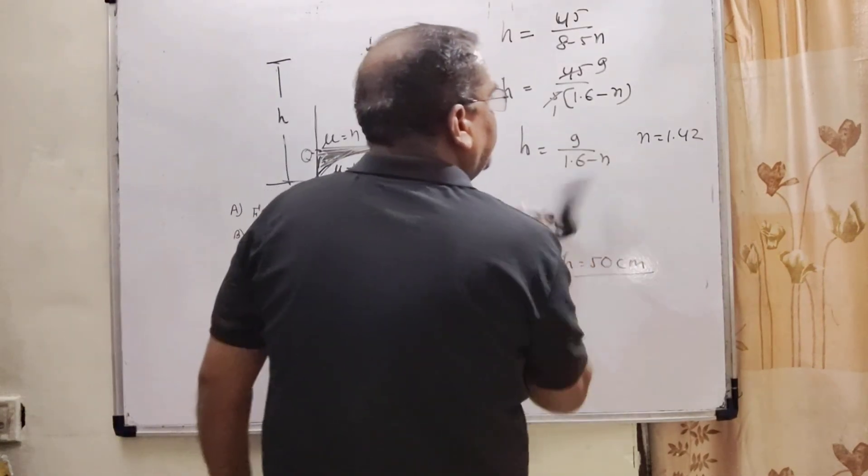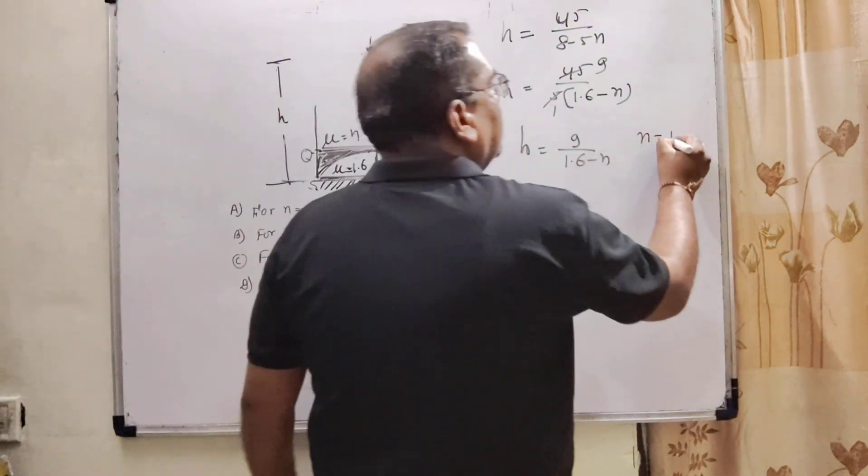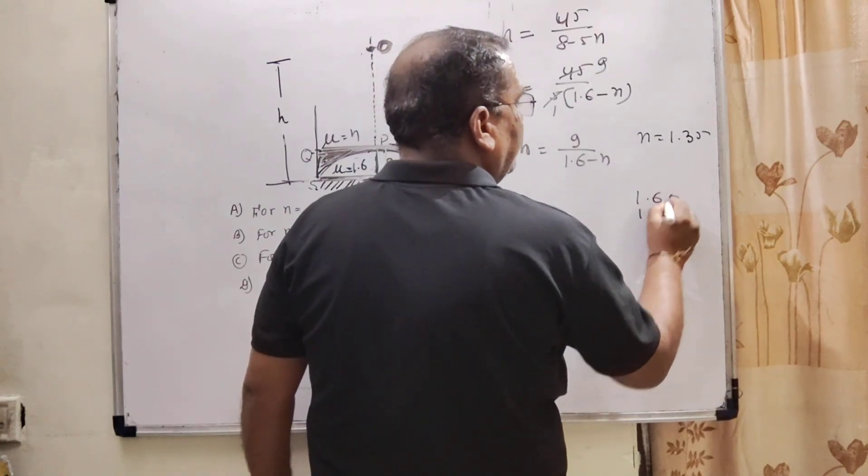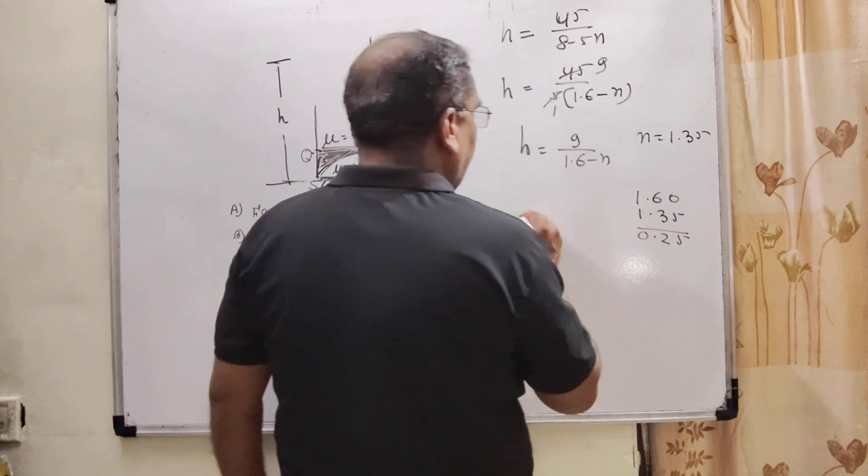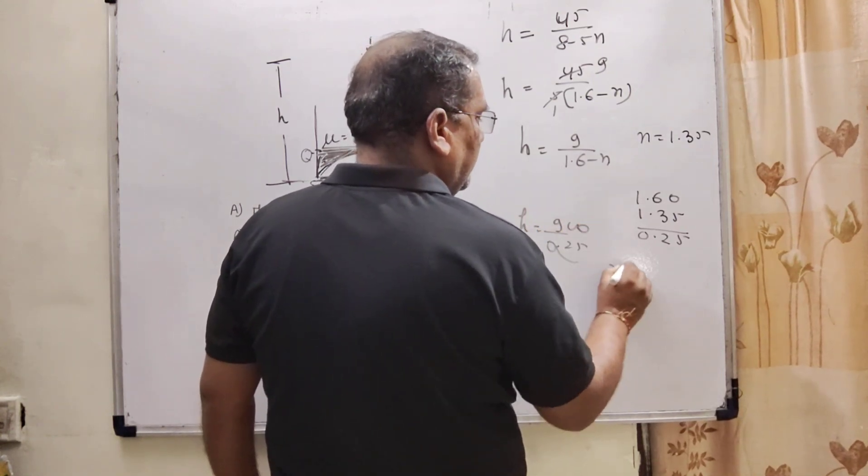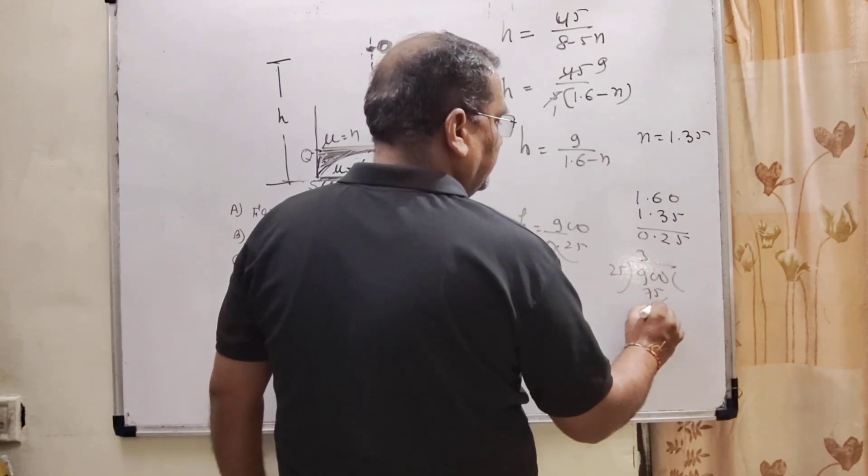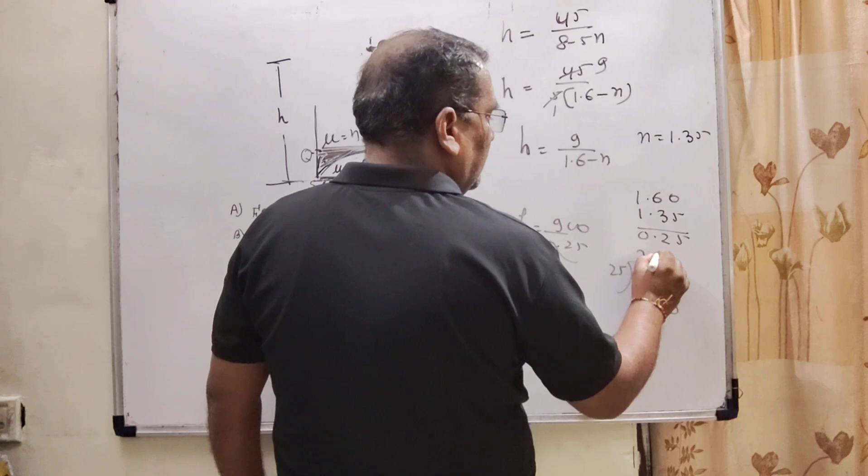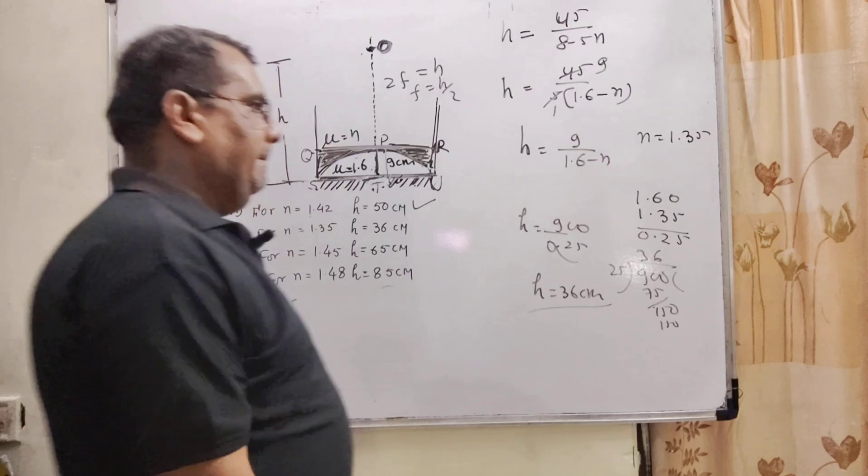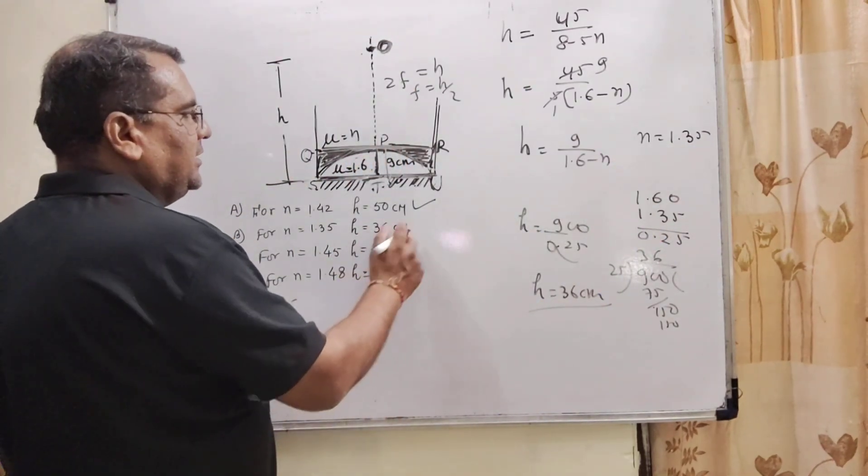Now substitute n equals 1.35. So h equals 9 upon 1.8 minus 1.35, which is 9 upon 0.45. This gives h equals 30 centimeters for n equals 1.35. So h equals 30 centimeters is correct.